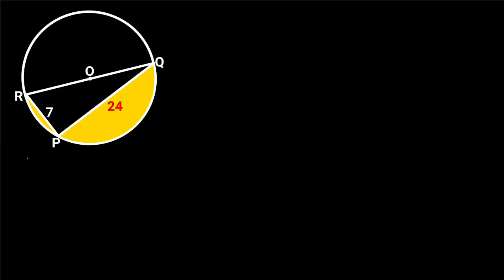This figure is a circle with center O. QR is the diameter of the circle, and PQR is a triangle. If PQ is equal to 24 units and PR is equal to 7 units, find the area of the shaded portion.